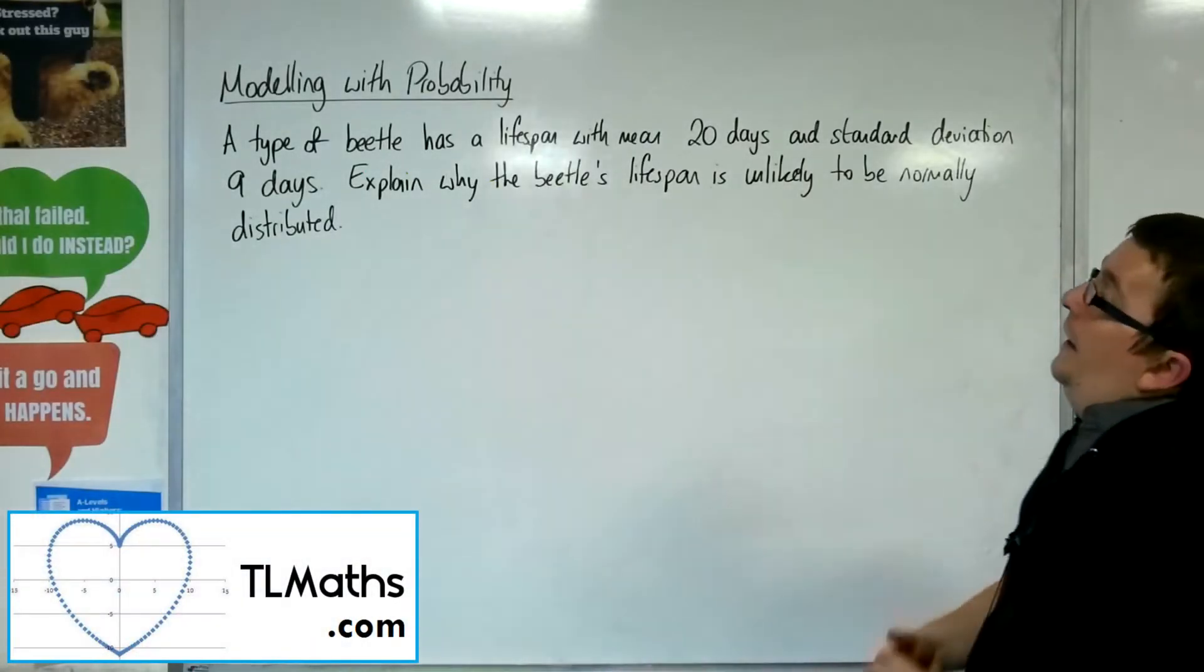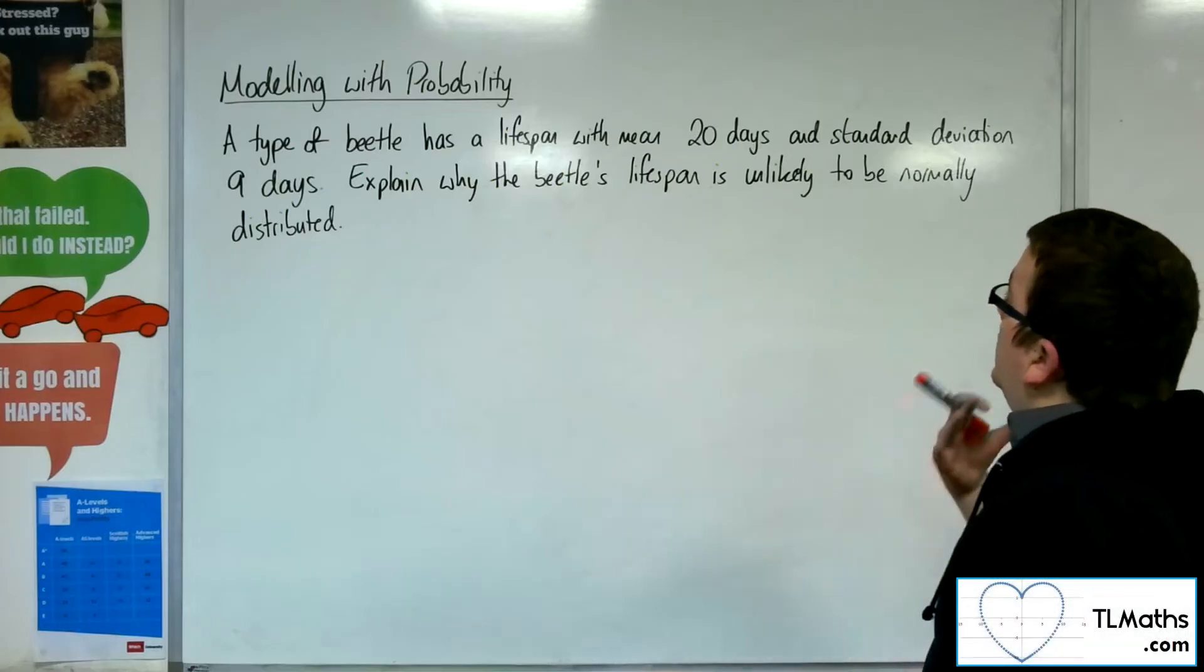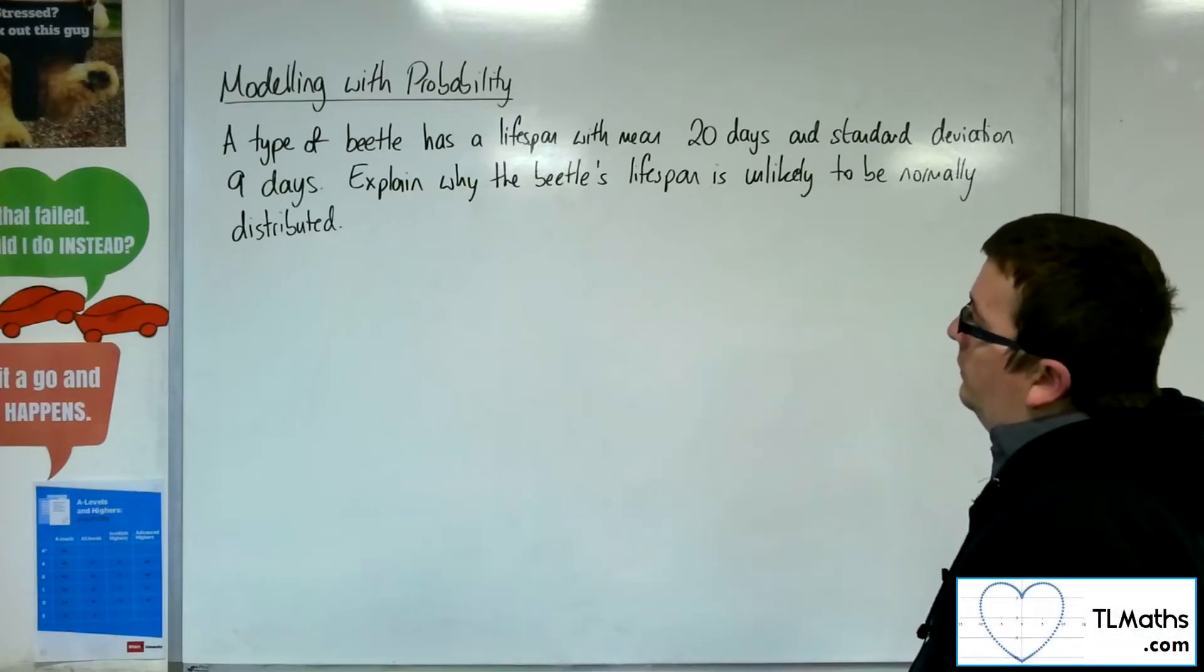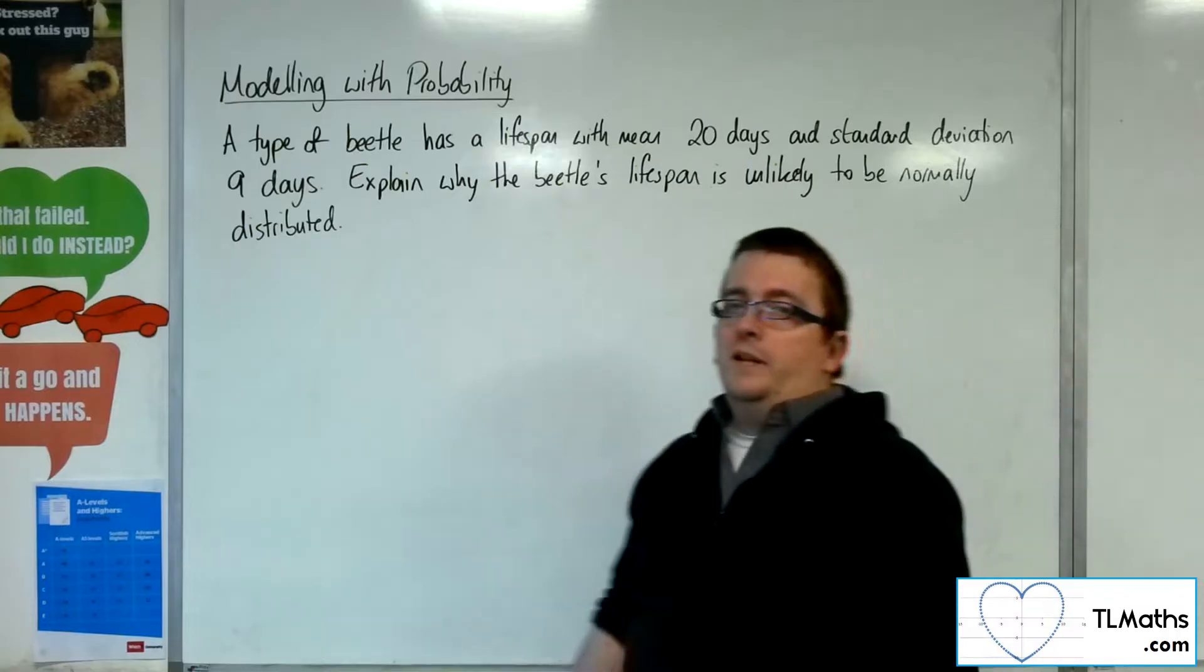We've got a type of beetle and its lifespan has a mean of 20 days and standard deviation of 9 days. Explain why the beetle's lifespan is unlikely to be normally distributed.